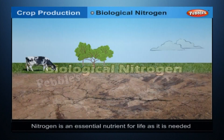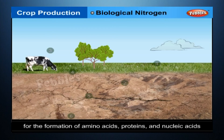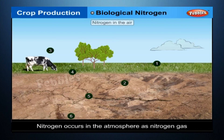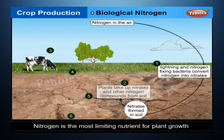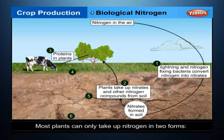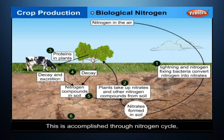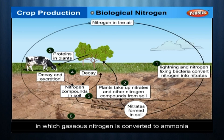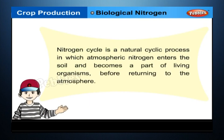Biological Nitrogen: nitrogen is an essential nutrient for life as it is needed for the formation of many biological molecules such as amino acids, proteins and nucleic acids. Nitrogen occurs in the atmosphere as nitrogen gas and is the most limiting nutrient for plant growth because most plants can only take up nitrogen in two forms: ammonium ion and nitrate ion. This is accomplished through the nitrogen cycle, in which gaseous nitrogen is converted to ammonia and subsequently into other biological compounds, before returning to the atmosphere.